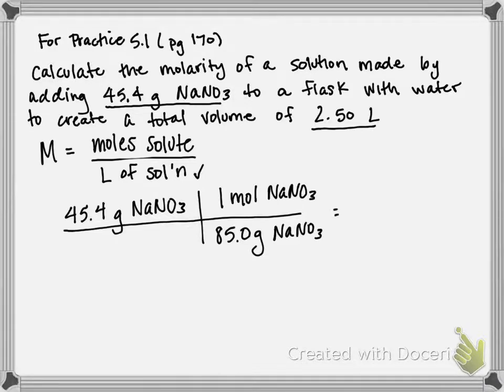So then if we divide these two values, our grams cancel, we're left with moles. We divide these two values, 45.4 divided by 85, you should get 0.53411 moles.